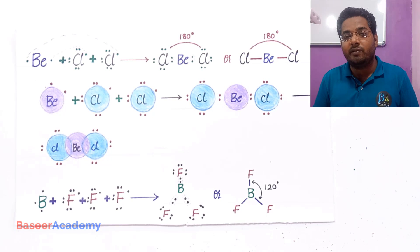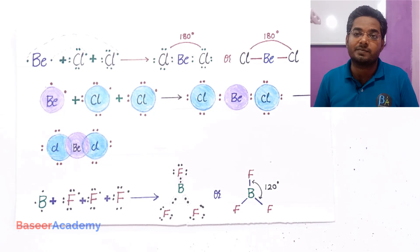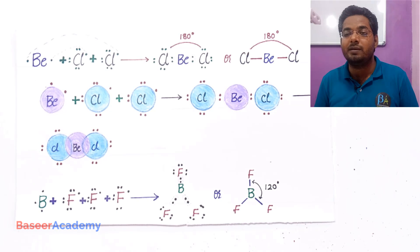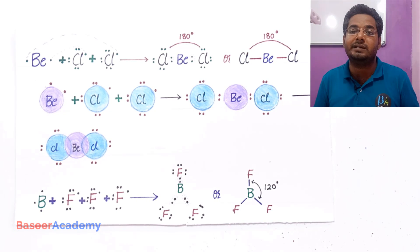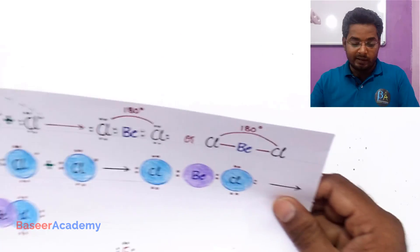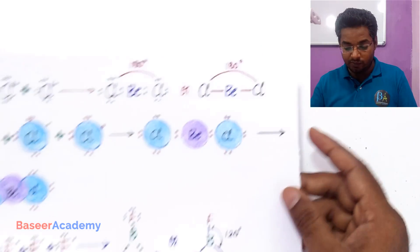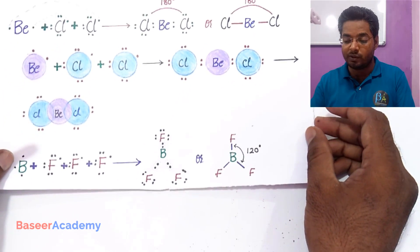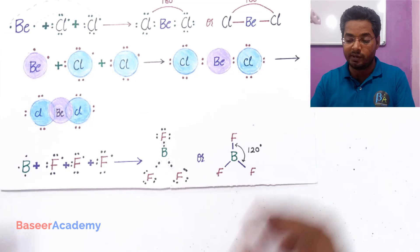Valence shell electron pair repulsion theory could successfully explain the bond angles and could thereby predict the shapes of the molecules. Let us now learn about valence shell electron pair repulsion theory.